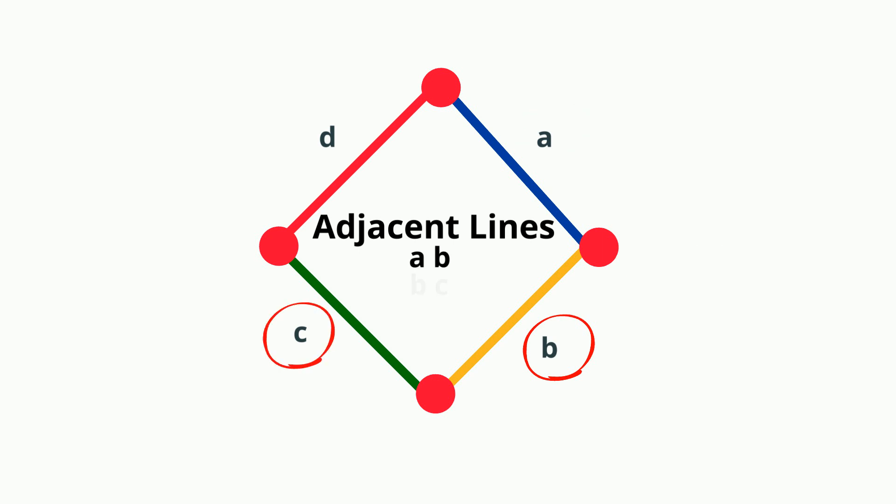B and C share a common vertex. C and D and D and A. So all of these lines or pairs would be adjacent.